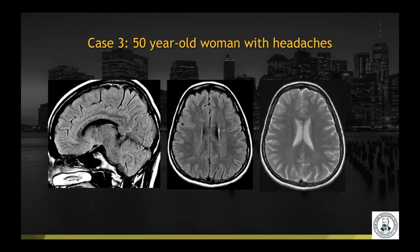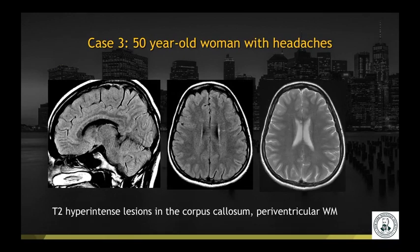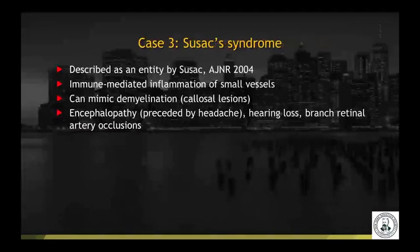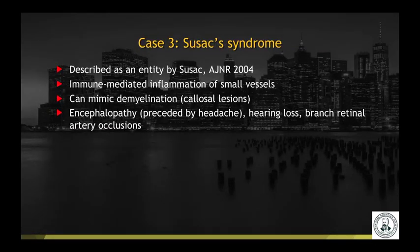Case number three: a 50-year-old woman with headaches. T2 FLAIR and T2-weighted imaging demonstrates T2 hyperintense lesions in the corpus callosum as well as the periventricular white matter. This is a case of Susac syndrome. It's an immune-mediated inflammation of small vessels, but because of the imaging appearance it can mimic demyelination because of the callosal lesions. There is a classical clinical triad of encephalopathy, hearing loss, and branch retinal artery occlusions.